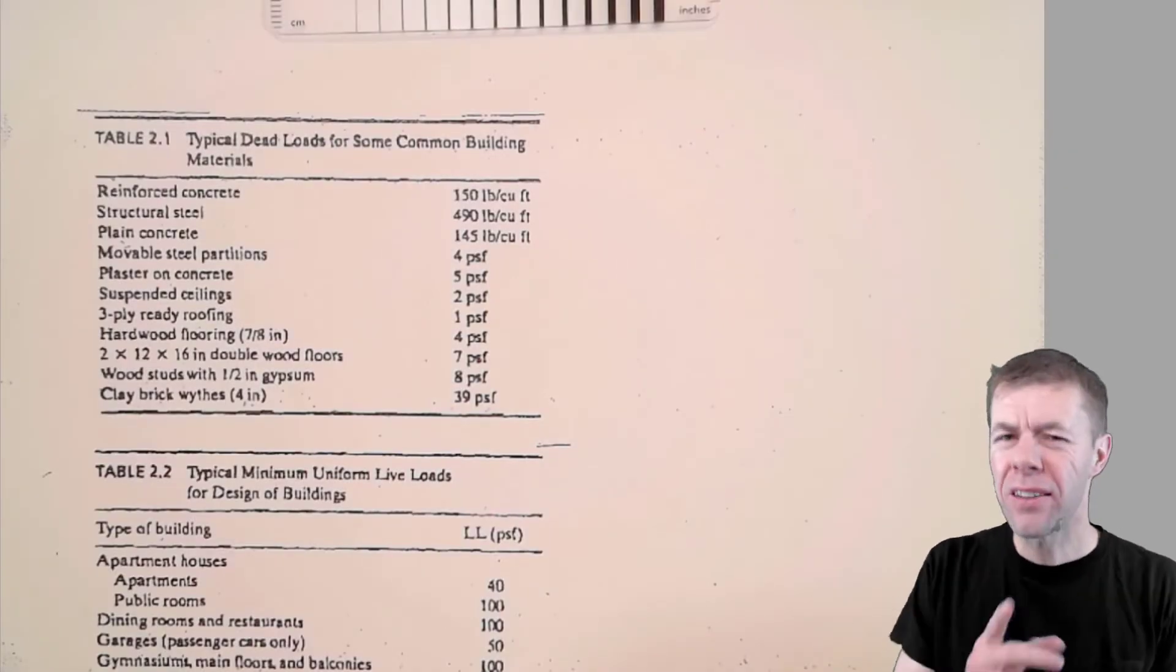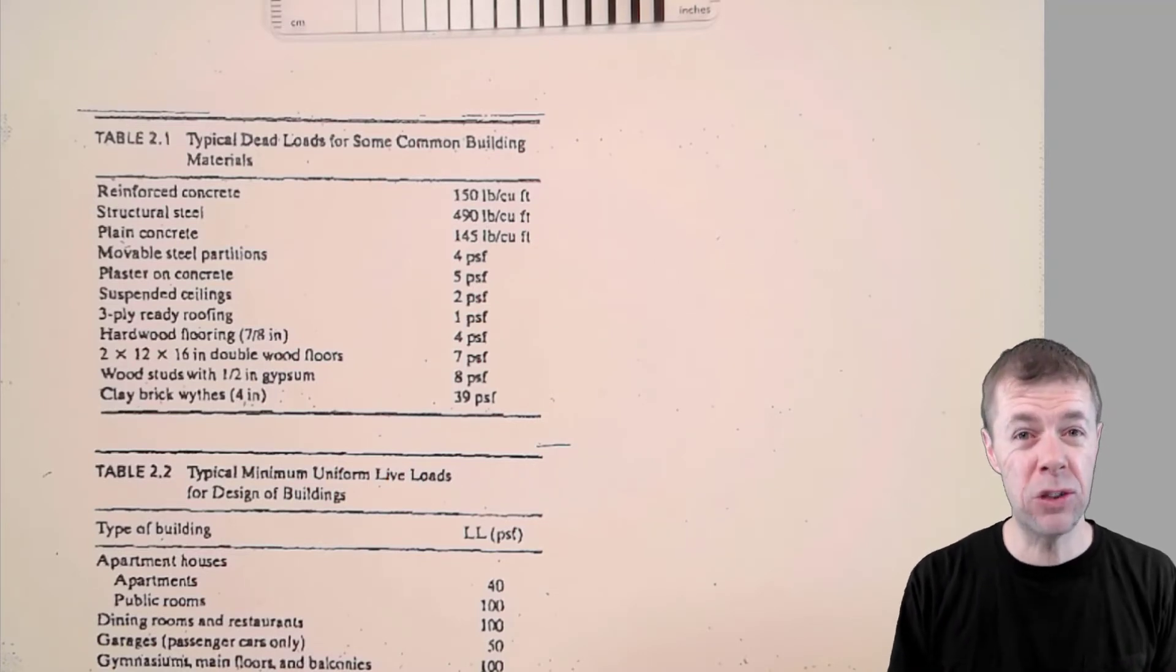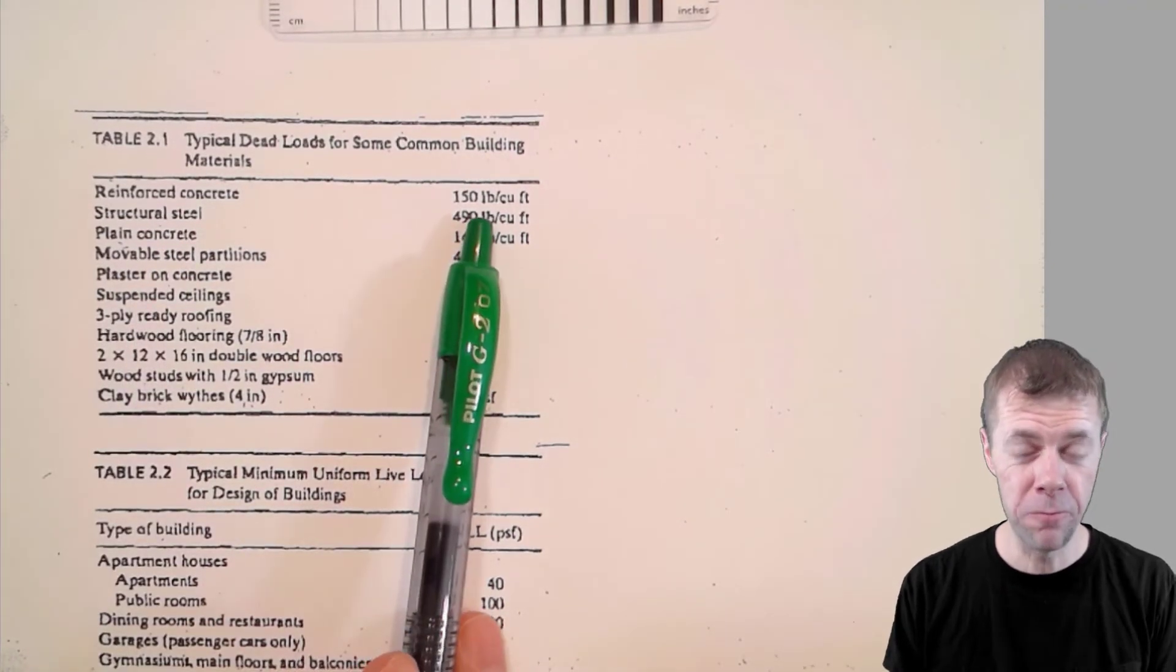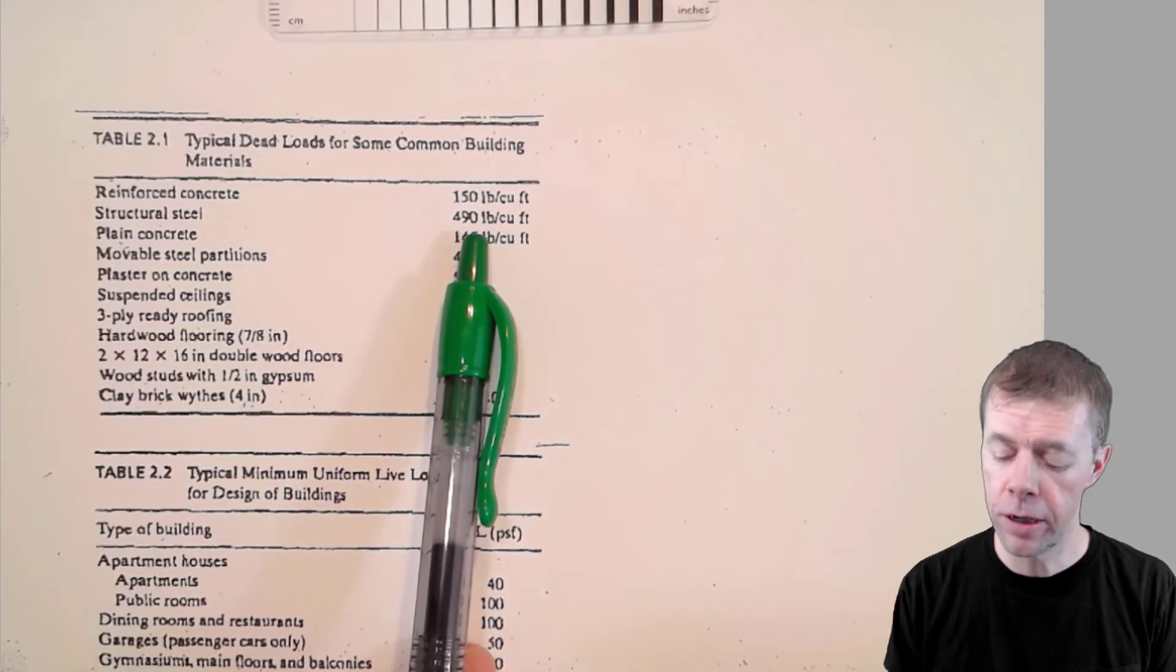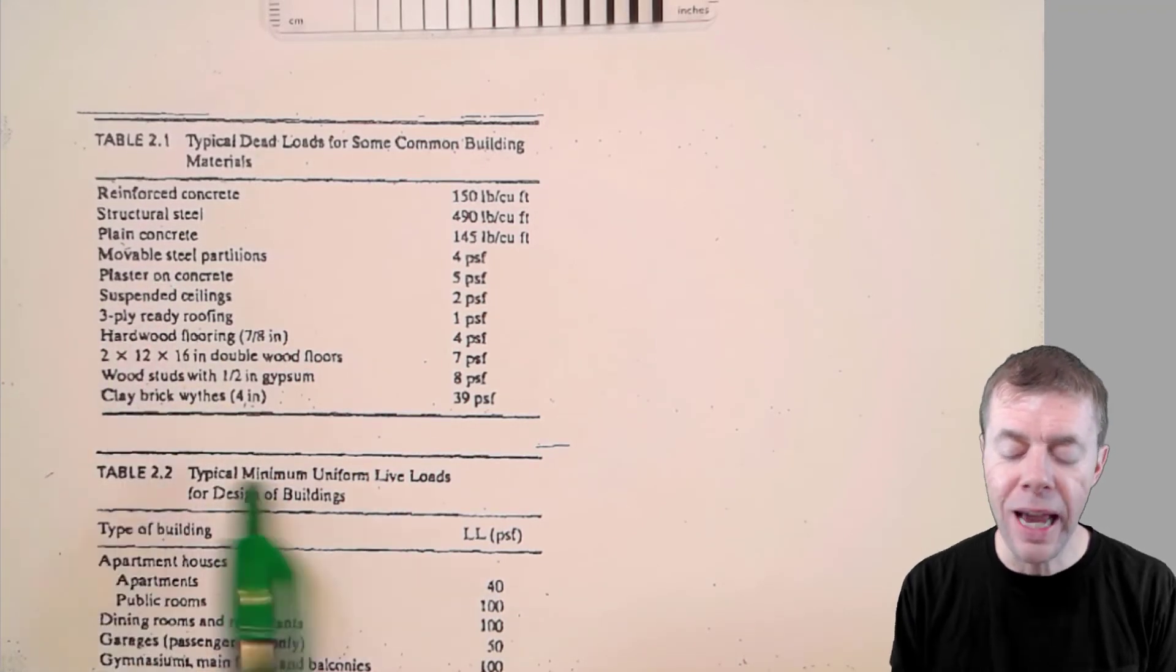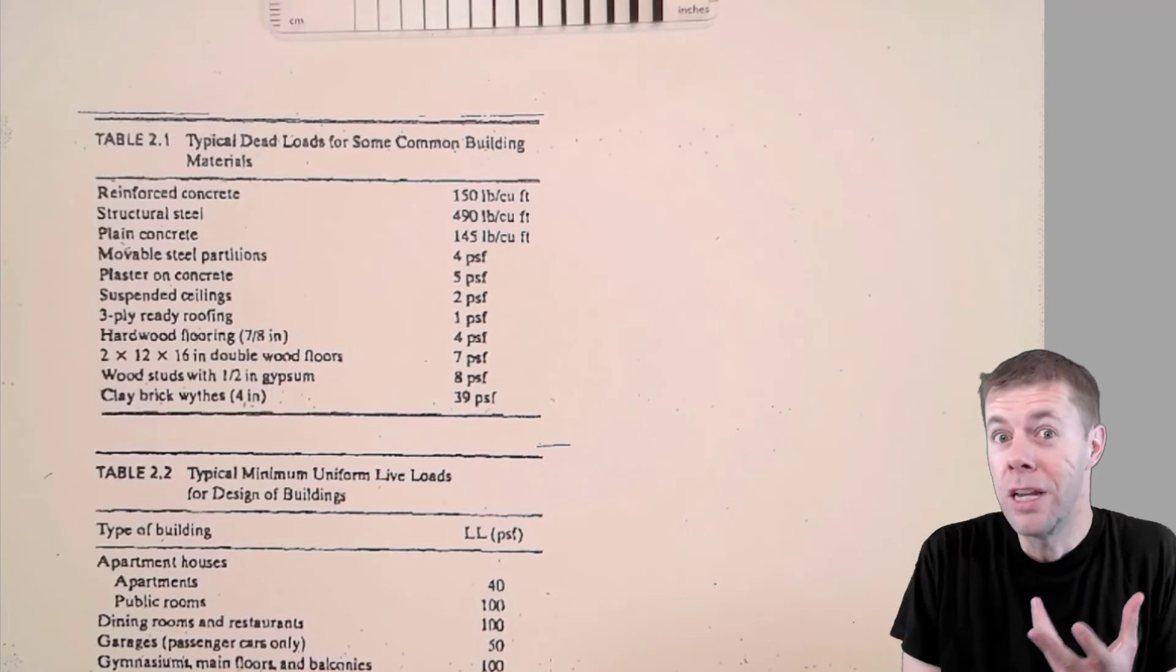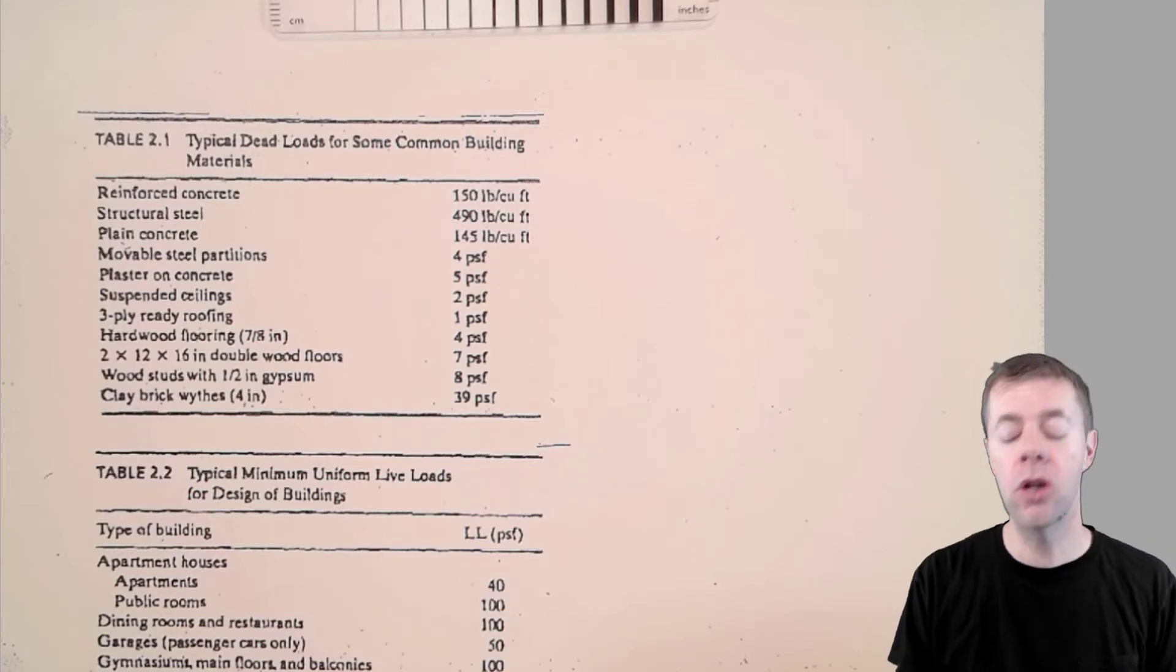Within ASCE 7, that's that code I was telling you about earlier that gives you some ideas about loads, gives you all kinds of neat stuff. It tells you, for example, what are the common loads for different materials, like reinforced concrete, 150 pounds per cubic foot. Structural steel, 490 pounds per cubic foot. Plain concrete, movable steel partitions, plaster, these are all dead loads, typical dead loads, and they've got a whole list of them. So you don't have to necessarily know how much brick weighs. You could, if you have that information, or if you don't, you can go to ASCE 7 and it gives you a good idea.